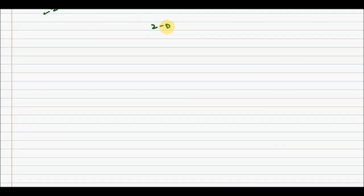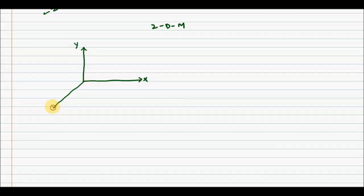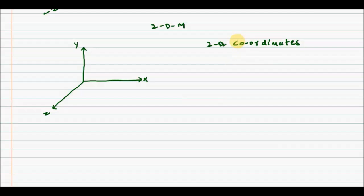Now let's talk about two dimensional motion. Again drawing the Cartesian coordinate system with x, y, and z axes: if a particle moves in such a way that two coordinates are changing simultaneously with time, that is called two dimensional motion.